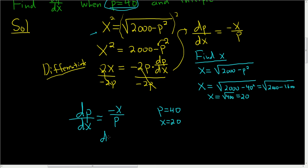So dp/dx when p is equal to 40 is equal to, well, when p is 40, x is 20. So this is negative 20 over 40. So this is negative 1/2.